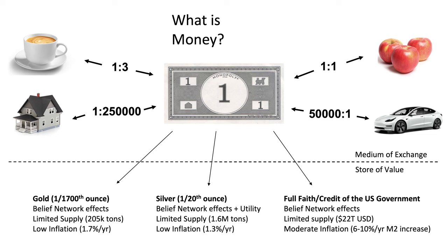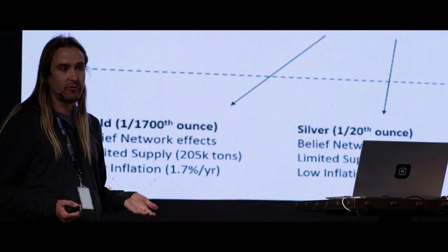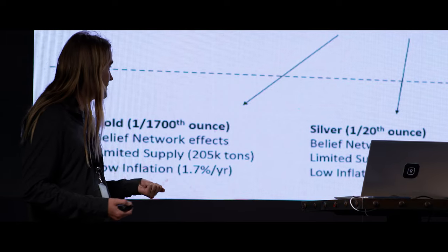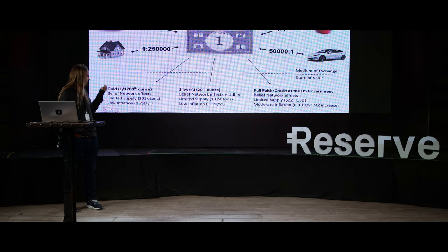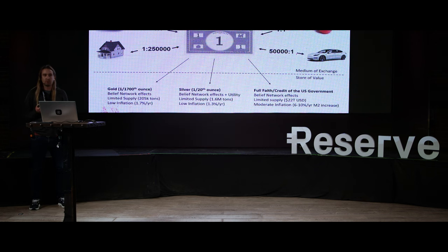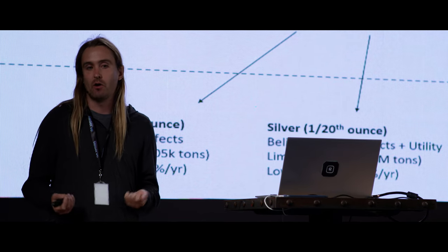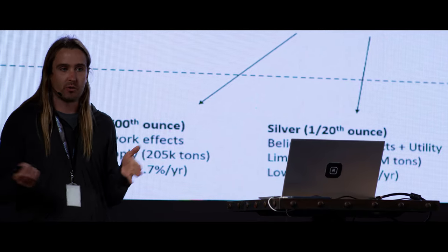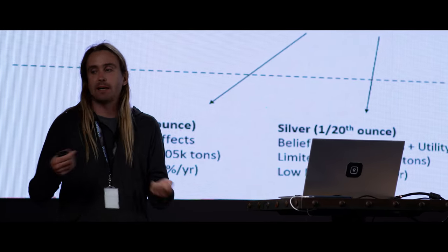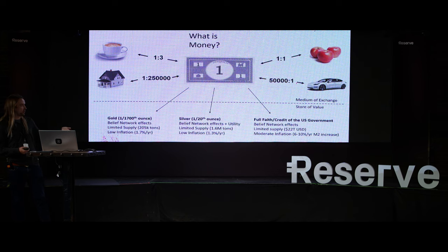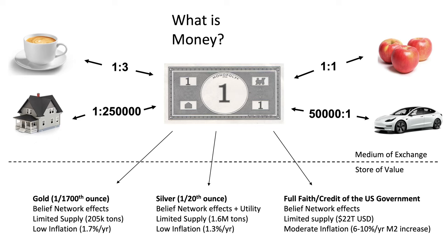Silver is pretty similar, with inflation of about 1.3%. But since 1971, all U.S. dollars and global currencies have been based on the full faith and credit of the U.S. government or other governments. This is similar to gold or silver in that you have belief network effects — people believe globally that a U.S. dollar holds value — and you also have limited supply. Right now there's 22 trillion U.S. dollars in circulation, and if the U.S. were to suddenly increase that to a quadrillion, you'd get massive distortions in pricing.